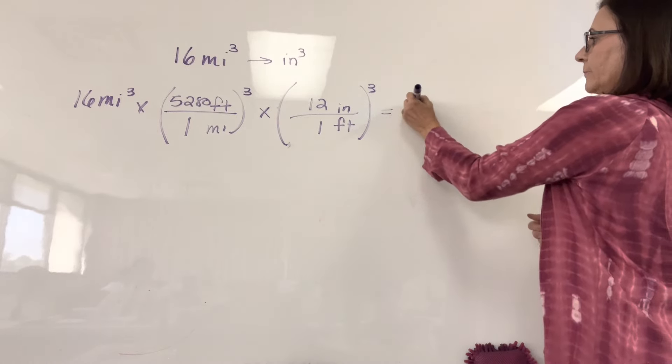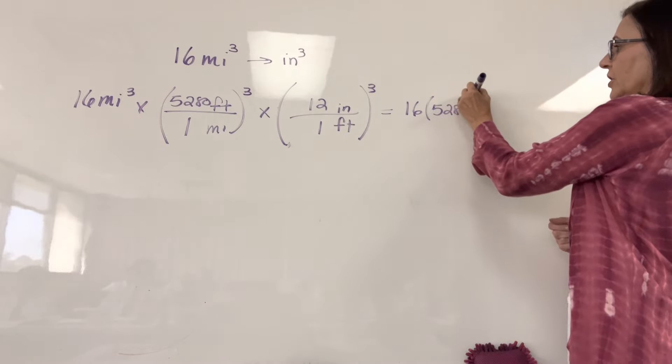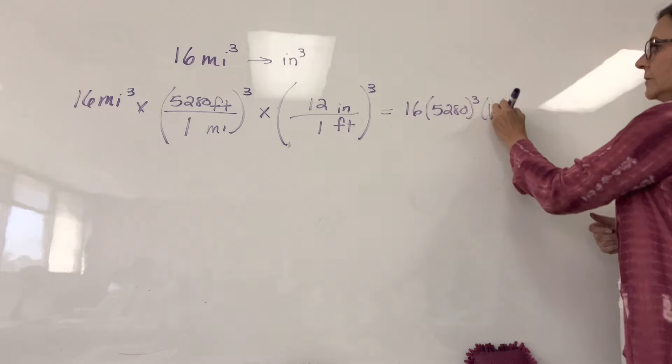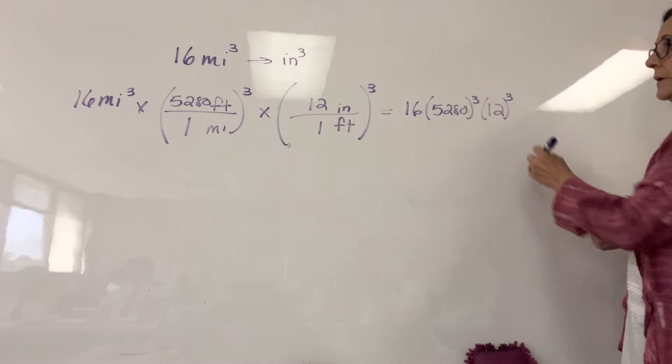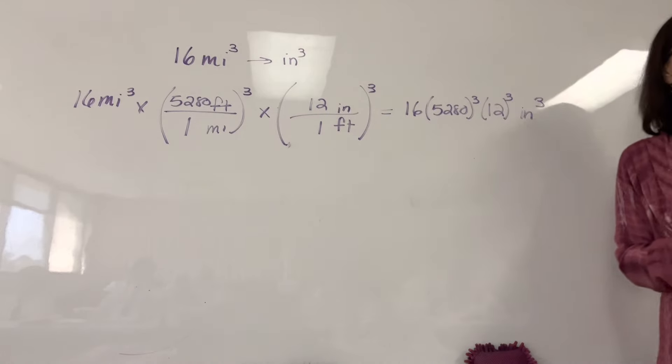So we end up with 16 times 5,280 cubed times 12 cubed inches cubed. What's the only term that's not cubed?